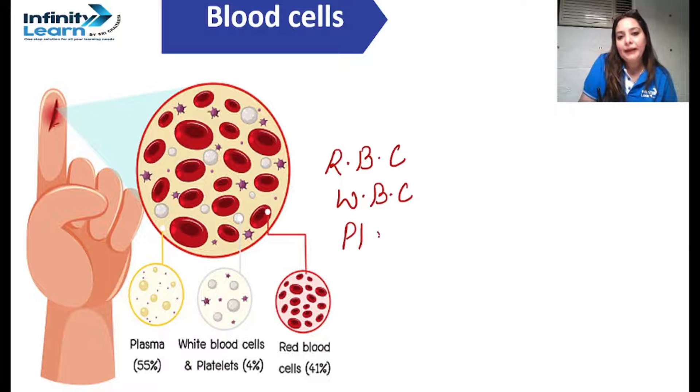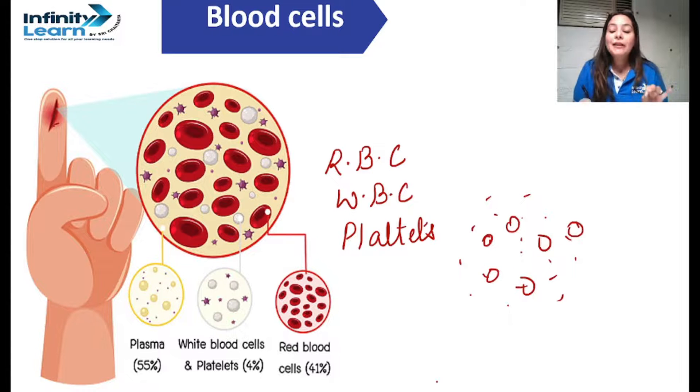Whatever is transported by blood is there in it, and that is the reason it acts as a nutritive medium, means it provides nutrition to the blood cells present in it. Now blood cells, as I have told you, there are three types of blood cells: RBC, WBC, and platelets.